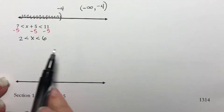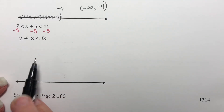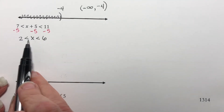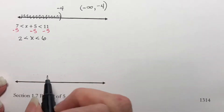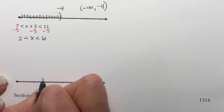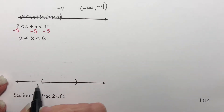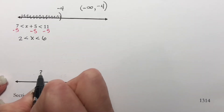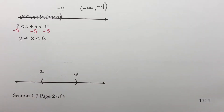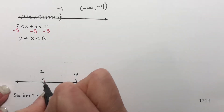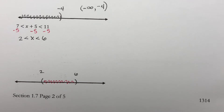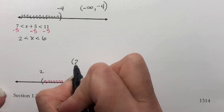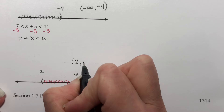This is easier to graph than the other kind because our x value is literally between 2 and 6. These do not have equal tos, so I will use parentheses on them — parentheses at 2, parentheses at 6, and we shade between them. So our answer in interval notation is (2, 6).